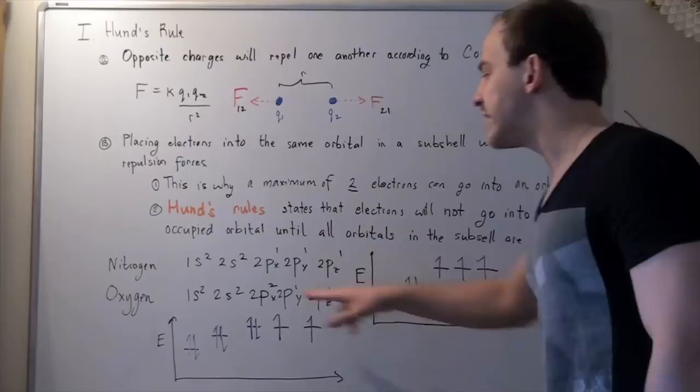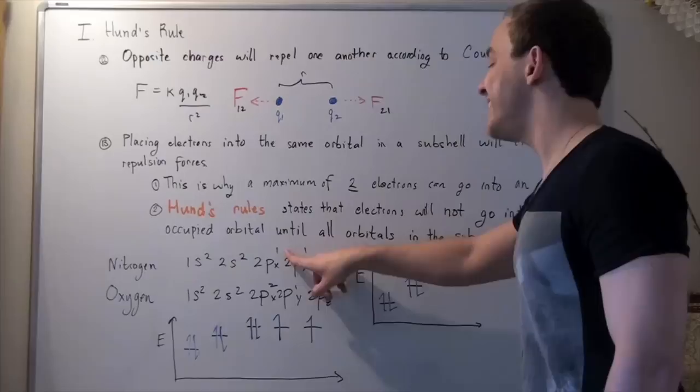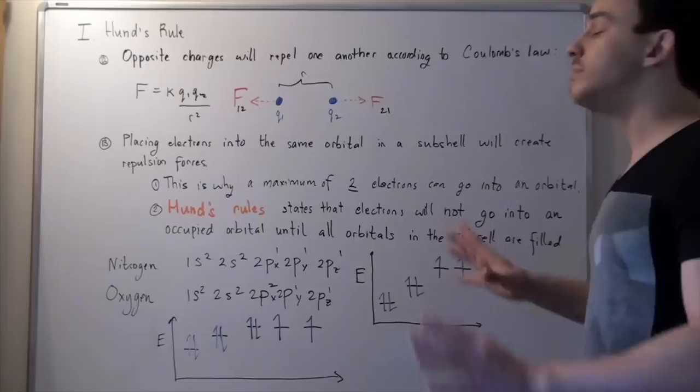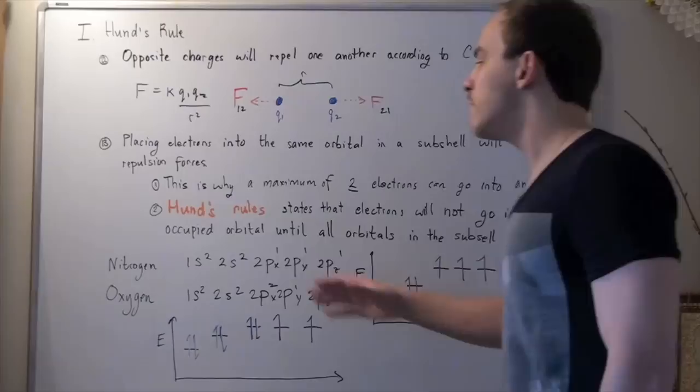Next, I put two electrons into my 2s. Upward arrow, downward arrow. And finally, I put one electron in each. So, I begin with a plus 1 half. So, upward, upward, and upward. And now, I'm done. This is my graphic representation of Hund's rule for nitrogen.